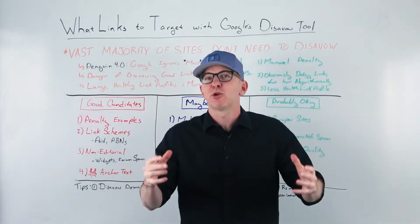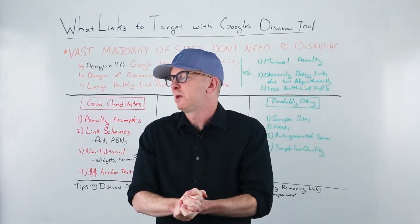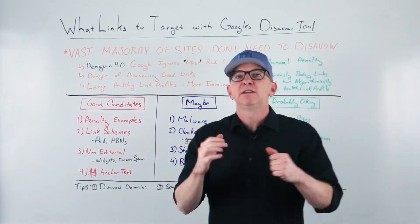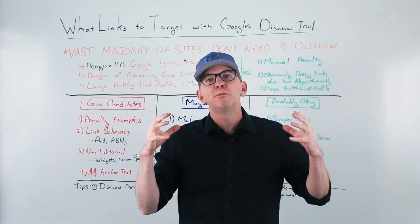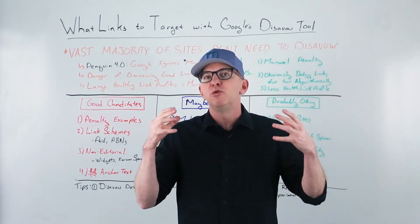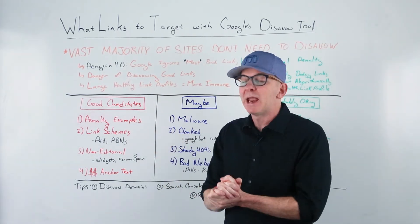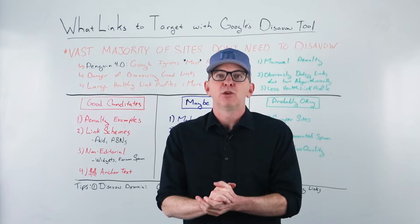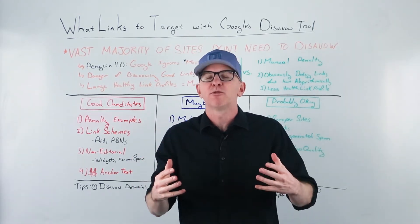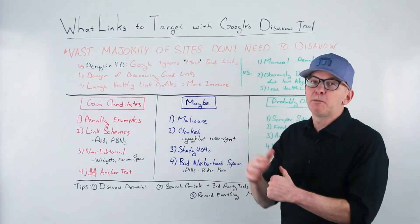I want to start out with a big disclaimer. The vast majority of sites don't need to disavow anything. Google's made tremendous progress over the last few years in determining what links to simply ignore. That was one of the big points of the Penguin 4.0 algorithm update. Before Penguin, you had to disavow links all the time, but after Penguin 4.0, Google simply ignored most bad links.